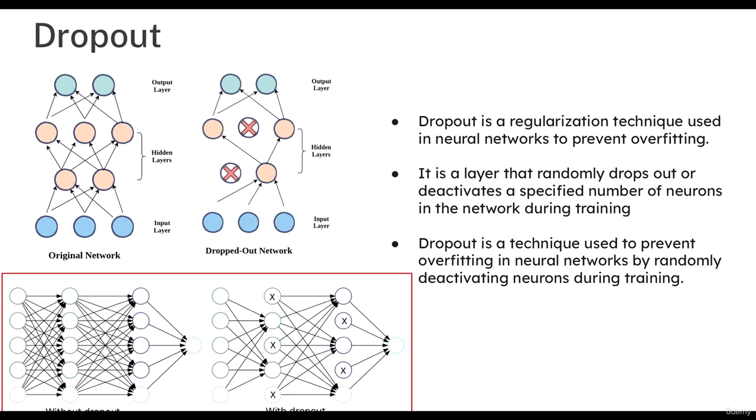This dropout has been really a game changer in deep neural networks, which really manages your networks and prevents your network from overfitting. So how does this work?